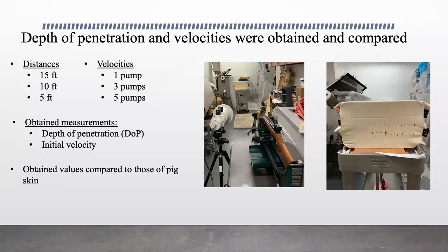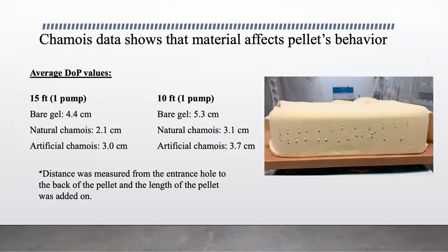Values were compared between the chamois cloths and were supposed to be compared to values obtained using pig skin. However, before testing could occur on pig skin, the college closed due to the pandemic, and comparisons between the chamois cloths and pig skin could not be drawn. Much of the data collected consisted of DOP values and initial velocities for the natural and artificial chamois cloths, with more testing conducted on the natural chamois. Nonetheless, the DOP values revealed that the chamois cloths affect the pellet's behavior. The same chamois cloths even produced similar results months after first use.